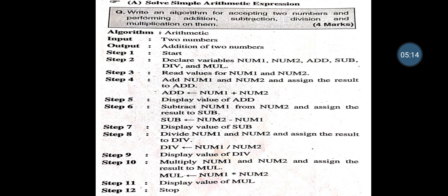Step 1: Start. Step 2: Declare variables Num1 and Num2, and output variables Add (for addition), Sub (for subtraction), Div (for division), and Mul (for multiplication). Step 3: Read the values for Num1 and Num2. Step 4: Add Num1 and Num2 and assign the result to Add — so Add = Num1 + Num2. Step 5: Display the value of Add.